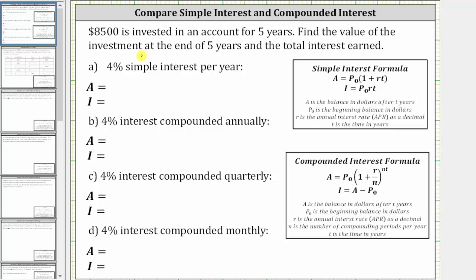$8,500 is invested in an account for five years. Find the value of the investment at the end of five years and the total interest earned. For part A, we have 4% simple interest per year. Then for parts B, C, and D, we have compounded interest — compounded annually, quarterly, and monthly.